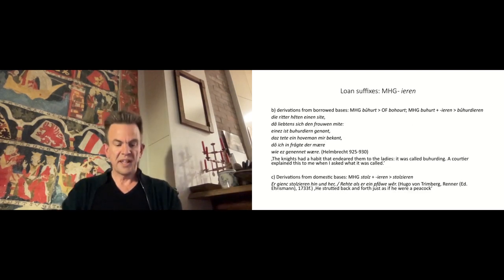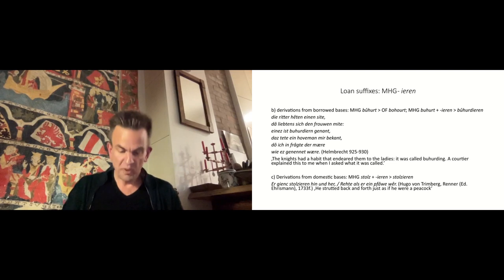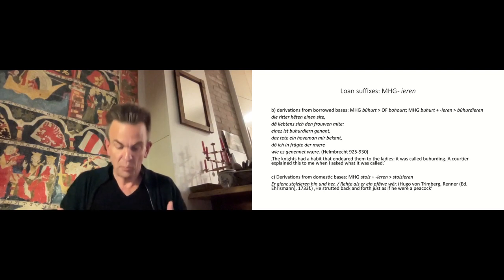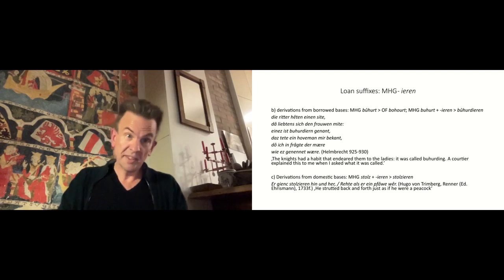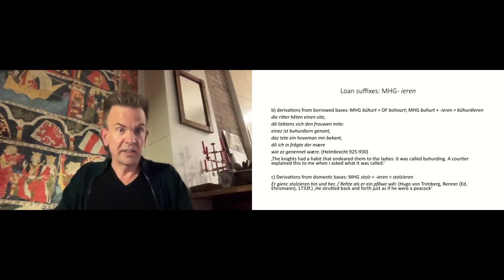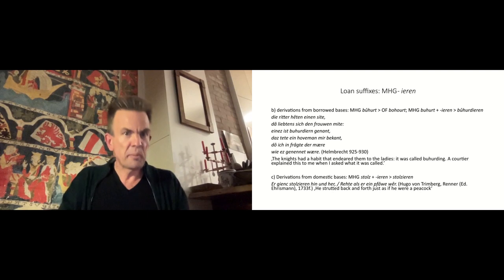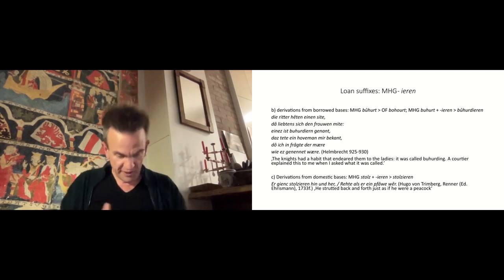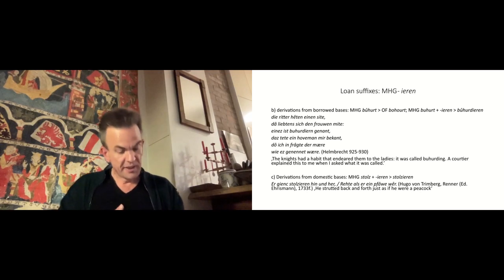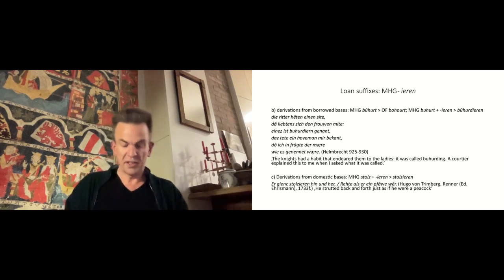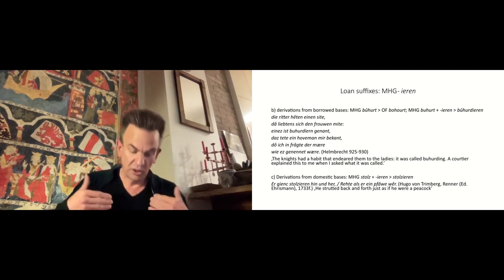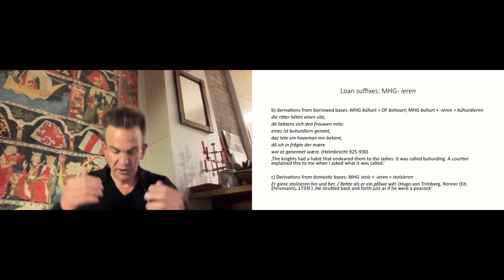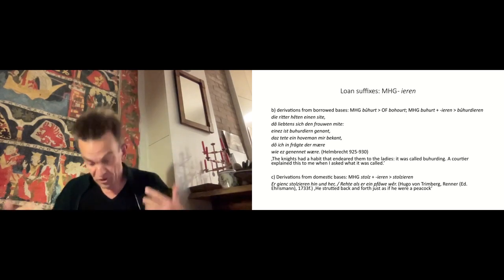The next group includes derivations in -ieren, whose Romance base was also borrowed in Middle-High German, like Buhurdieren, participate in a melee from Buhurt. Die Retter hätten einen Sittel, da liebten sich den Frauenmitte. Eines ist Buhurdieren genannt. Das Tett ein Hovermann mir bekannt durch ihn fragte der Märe, wie es genennet wäre. It is very common for Middle-High German -ieren formations to be created from a basic noun that has itself been borrowed. Take for example, or Tieren from Rotte, Tjostieren from Tjost, Busunieren from Busune, etc.